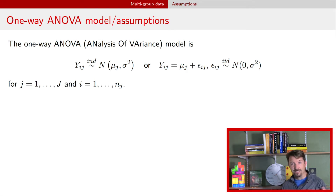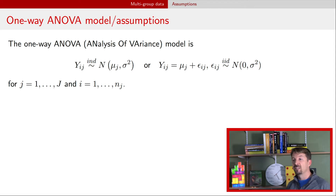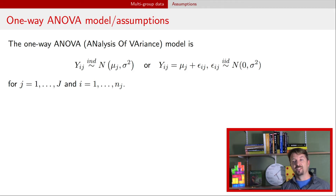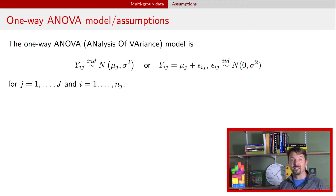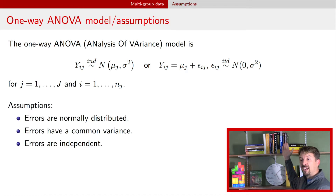There are two different ways you can write this model, and I've provided both here. Sometimes it's useful to think about one versus the other. In particular, when talking about residuals — estimated errors — those are simply the observations minus the mean for the group that observation is associated with. The second way of writing the model makes clear the assumptions: errors are normally distributed, have a common variance, and are independent.